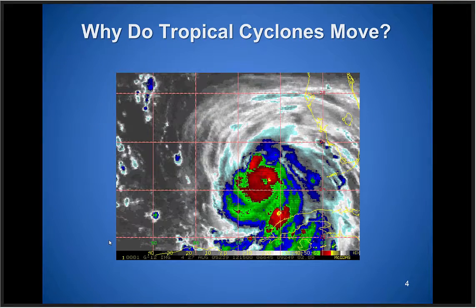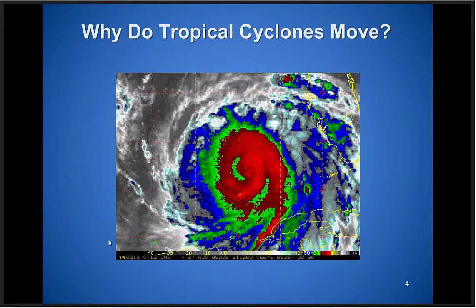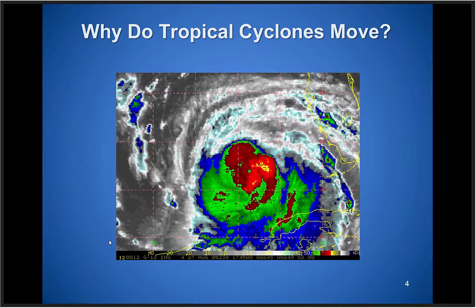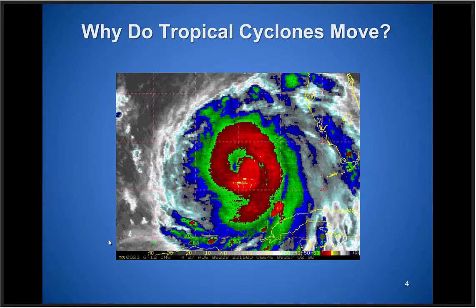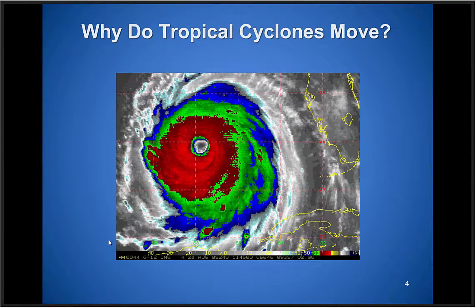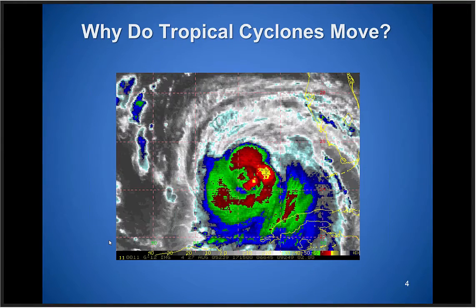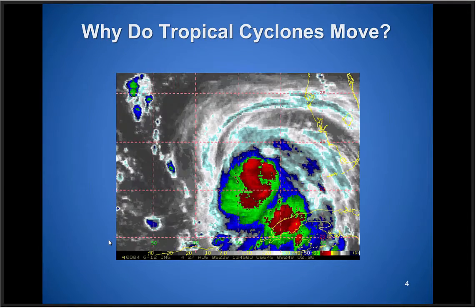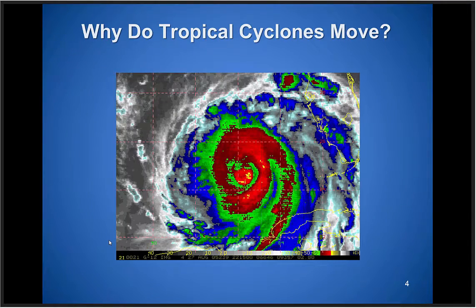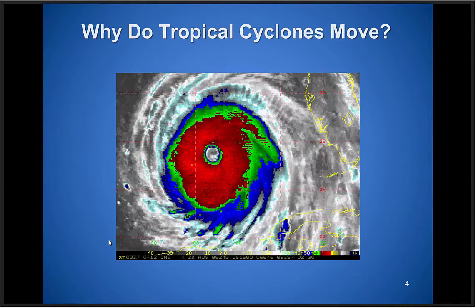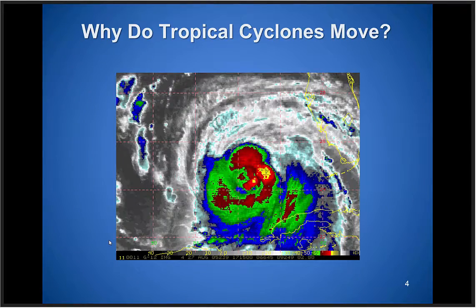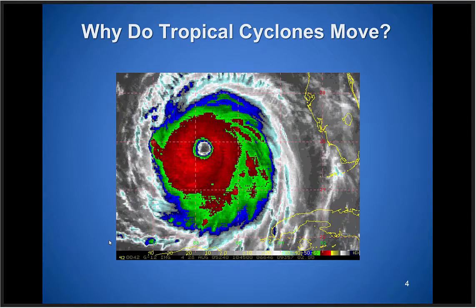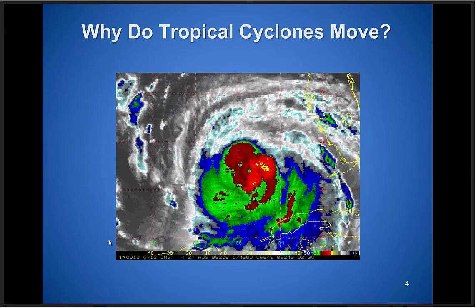Why do tropical cyclones move? There are many factors controlling the motion — as you can see in this animation, there's a general steady west-northwestward heading, but also small-scale oscillations and wobbles of the center and eye occurring on much shorter timescales.